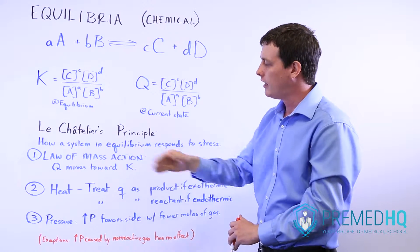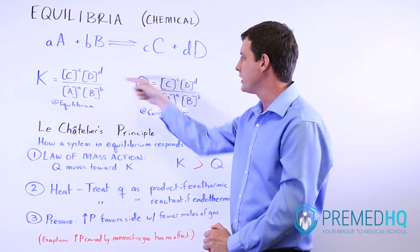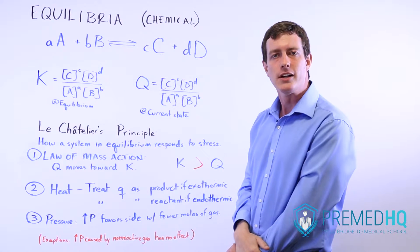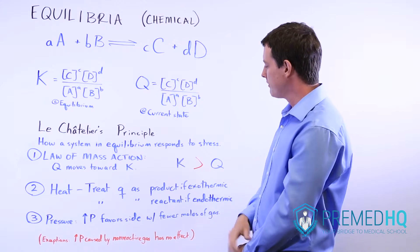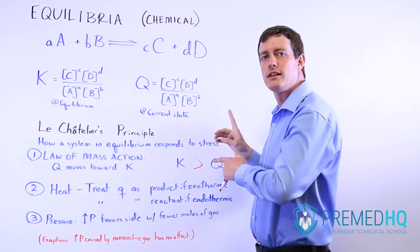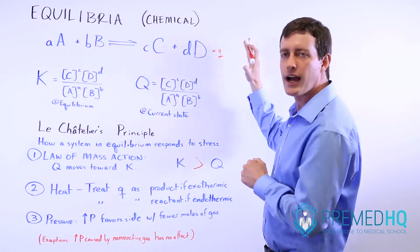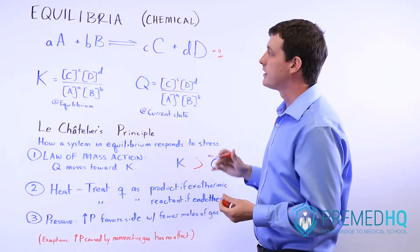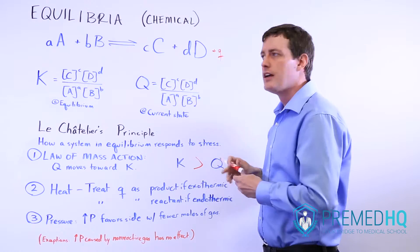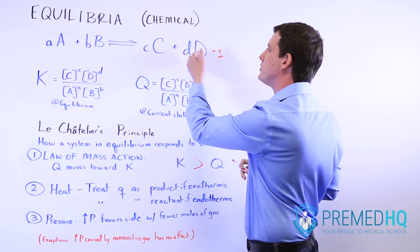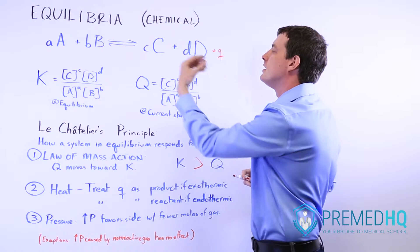The second component of Le Chatelier's principle is how it deals with heat. Notice that heat doesn't show up in these equilibrium equations here, but it does have an impact on the movement of a reaction. If you have an exothermic reaction, that is one that releases heat. And so you could just add plus Q here and treat heat as a product. And what that means is that if you were to move this reaction to a cooler environment where there isn't as much heat, then it would continue to move forward so it would produce more heat. Remember that if it's exothermic, this releases heat.